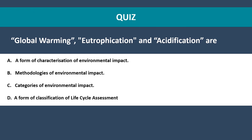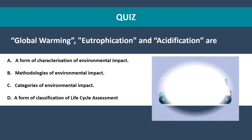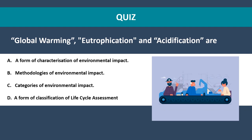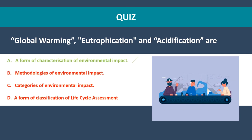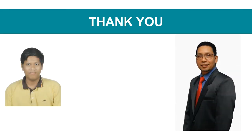Quiz: Global warming, eutrophication, and acidification are — (a) a form of characterization of environmental impact, (b) methodologies of environmental impact, (c) categories of environmental impact, or (d) a form of classification of life cycle assessment? The answer is (c): categories of environmental impact. That concludes the illustration of the impact assessment phase. Thank you for watching.